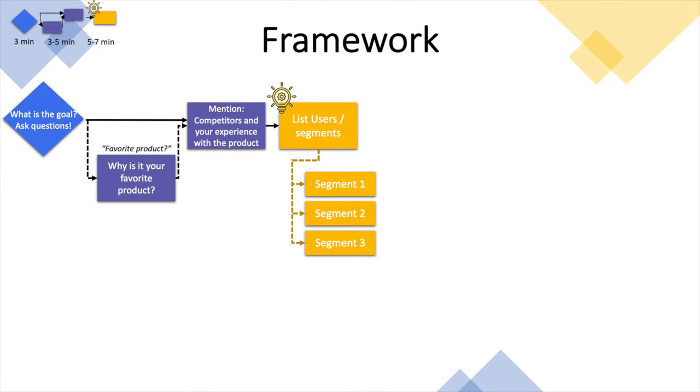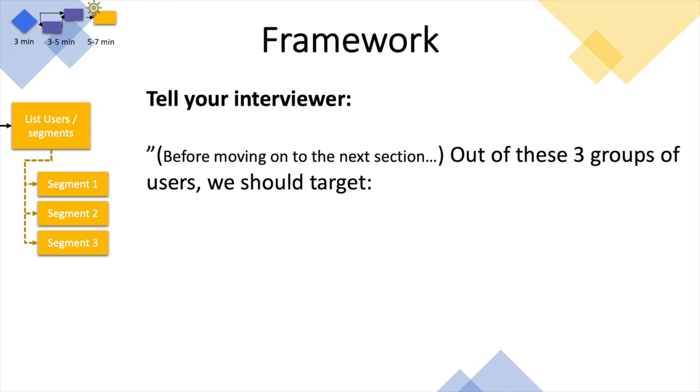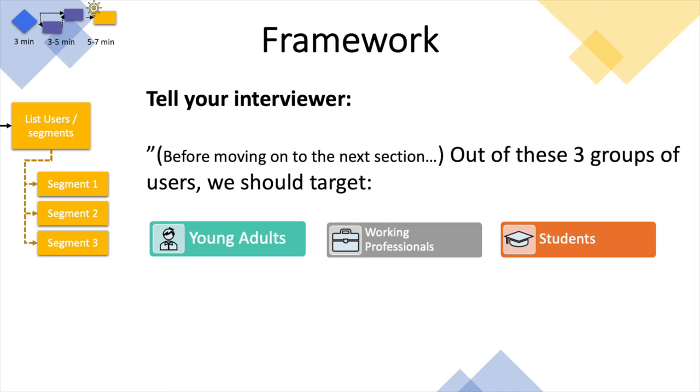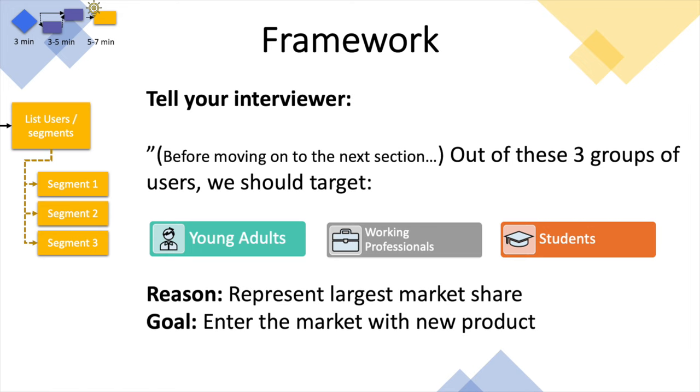Once you have your three groups of users, it's time to pick one. Choose one and confirm with your interviewer, telling them why you're picking that segment for this particular case. There's no standard rule — pick the one that makes most sense. For example, you can pick one because you think it represents the largest market share. You might say: 'Out of these three groups, I think we should target the young working professionals who are also part-time students. I believe they represent the largest market share, and since our goal is to enter the market with this new product, it makes more sense to go after this segment. Would that be okay?'